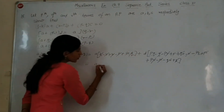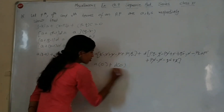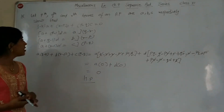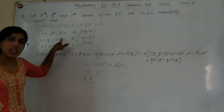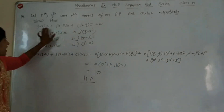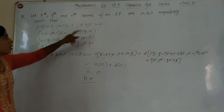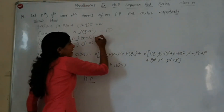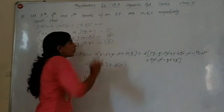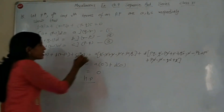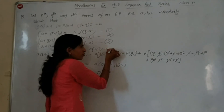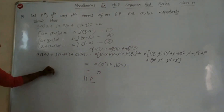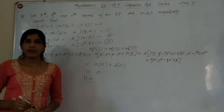So the left-hand side equals a·0 + d·0 = 0. Hence A(Q-R) + B(R-P) + C(P-Q) = 0. To recap: the Pth term is A, Qth term is B, Rth term is C. We multiplied the three equations by (Q-R), (R-P), and (P-Q) respectively, then added all three equations to get the answer 0. That was question number 15.